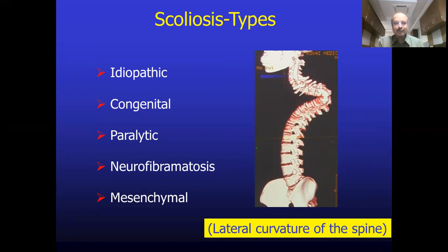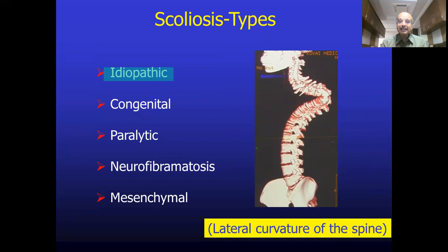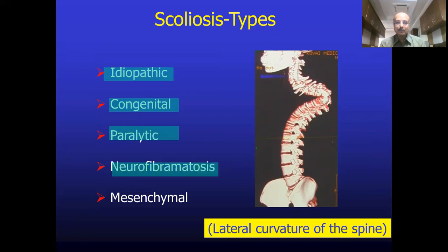Based upon the etiology, scoliosis is divided into idiopathic — 70% of scoliosis is idiopathic in origin. It is congenital in some, and sometimes it is associated with paralysis, which includes upper motor neuron paralysis, such as cerebral palsy, or lower motor neuron paralysis, such as poliomyelitis — so-called paralytic scoliosis. It could be associated with other abnormalities like neurofibromatosis, the von Recklinghausen disease, or mesenchymal disorders like Marfan syndrome.